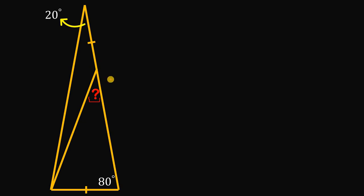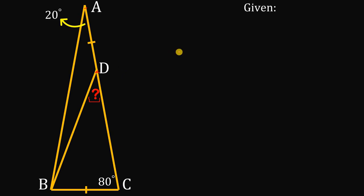To answer this question, let this vertex be equal to A, this vertex be equal to B, and this third vertex be equal to C. Now this vertex right over here is very important also, and let's call this D. We know that angle A must be equal to 20 degrees, and angle C must be equal to 80 degrees — that is also given.